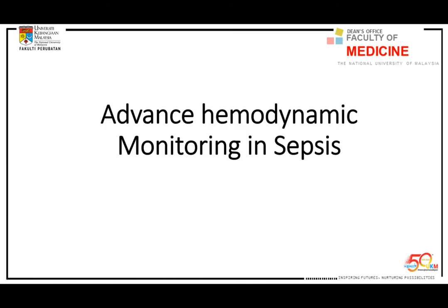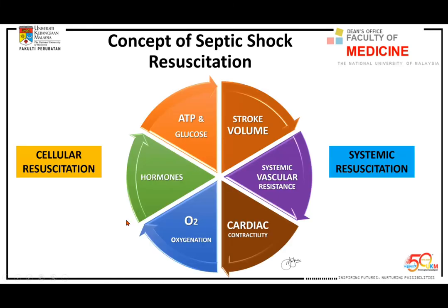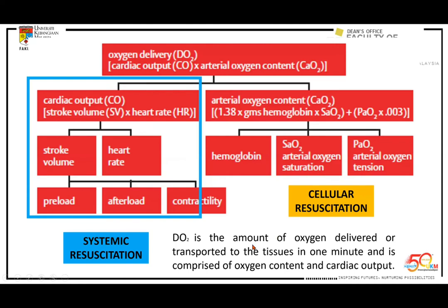Now for advanced hemodynamic monitoring. I highlight oxygen delivery here because everybody looks at cardiac output and oxygenation in the blood sent to the cells. However, there are a few more components: our hormones, and glucose for ATP production. This is the full picture of resuscitation. But now I want to concentrate on the systemic components — stroke volume and cardiac output.